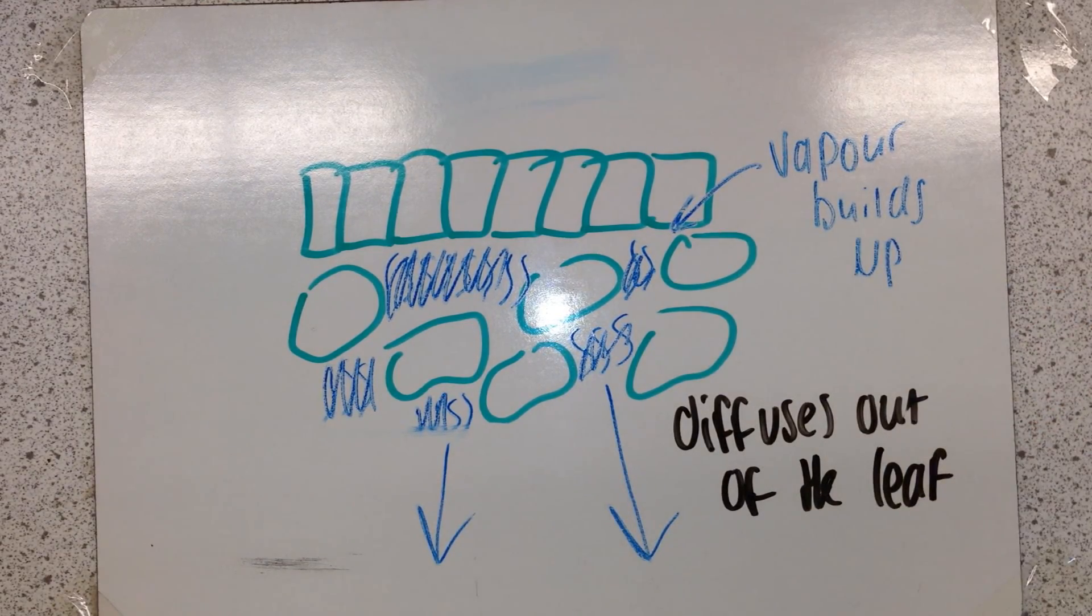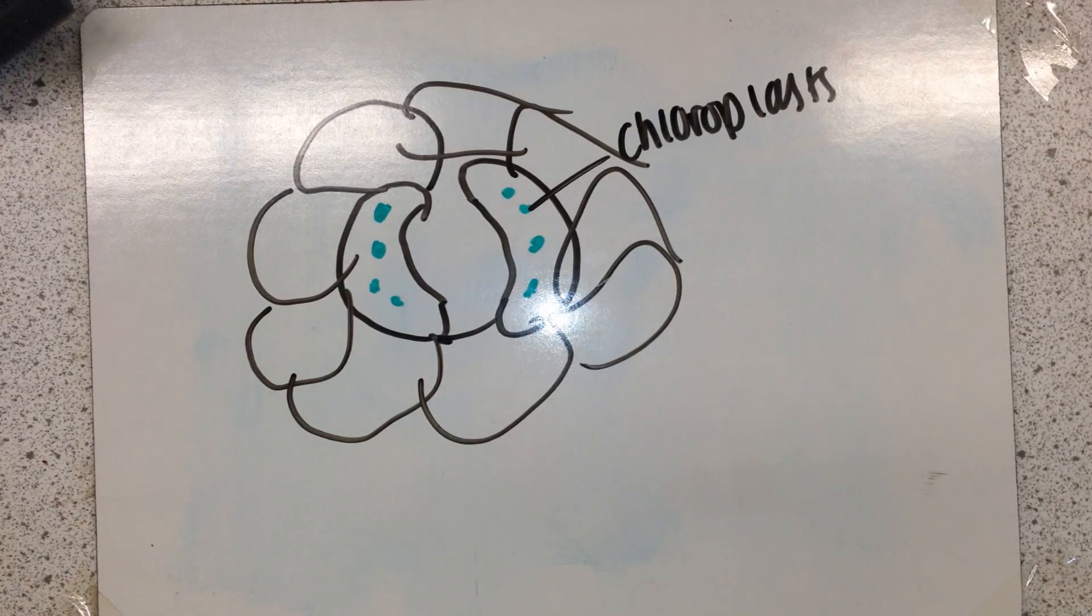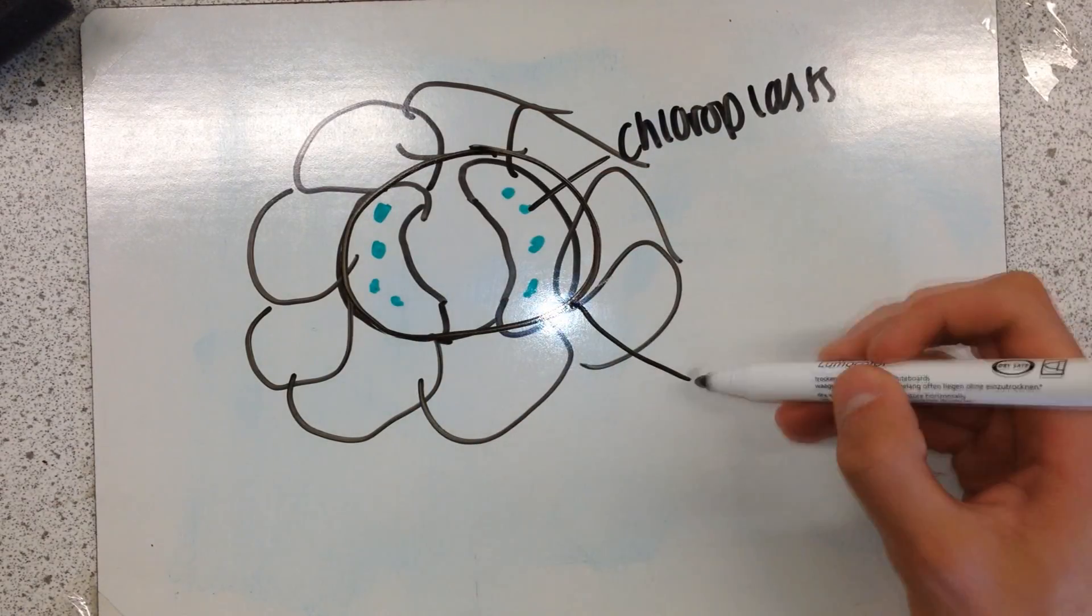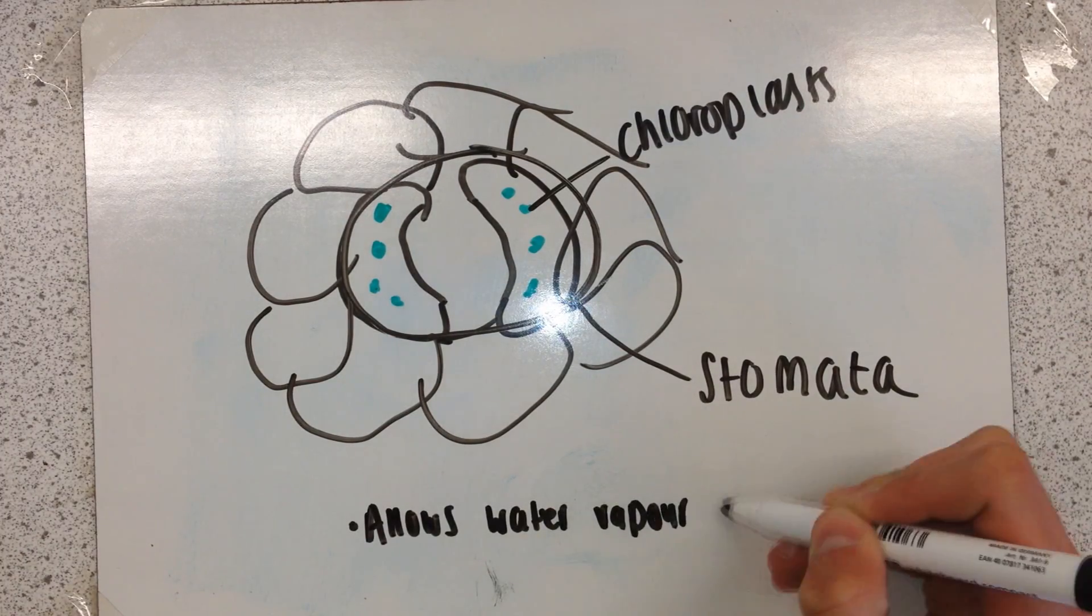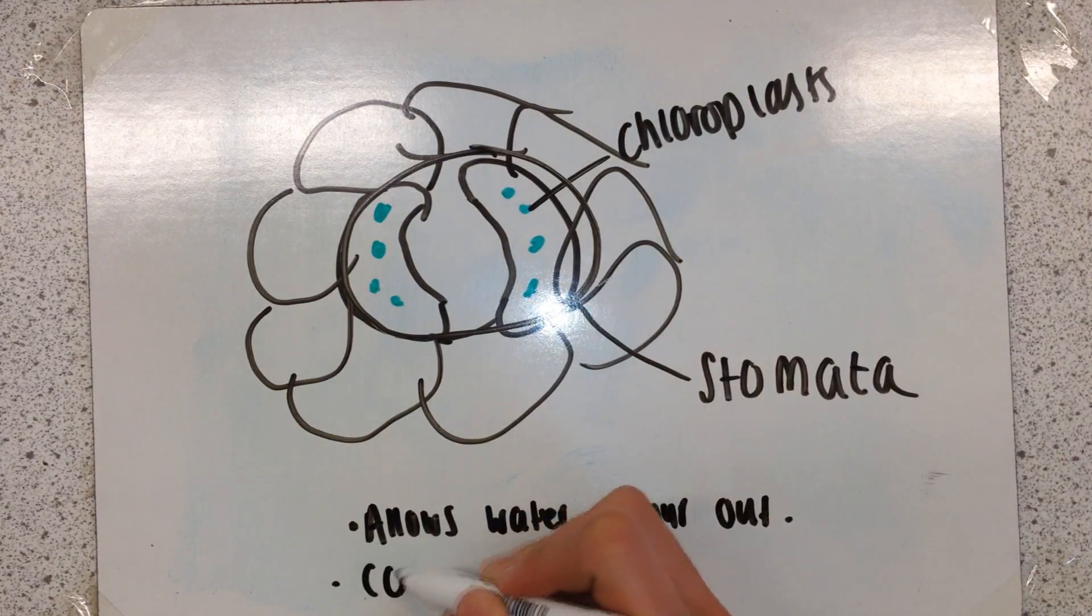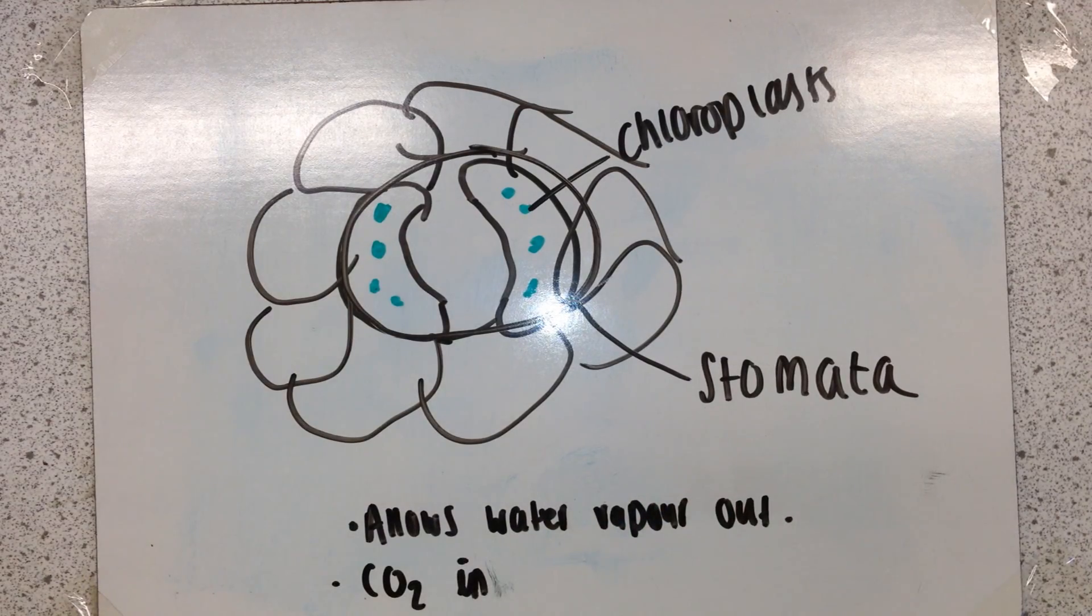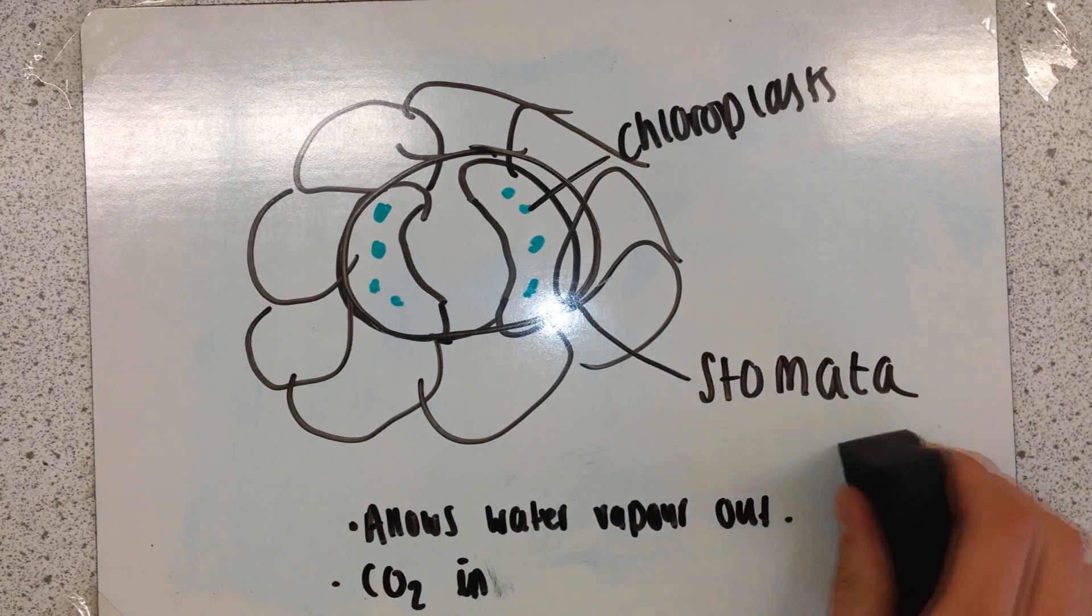Down the diffusion gradient, the water vapor will diffuse out of the leaf. This bit here is the stomata in a leaf. This allows gaseous exchange - it allows water vapor to leave the leaf and carbon dioxide to enter, but we're going to be talking about water vapor in this video.